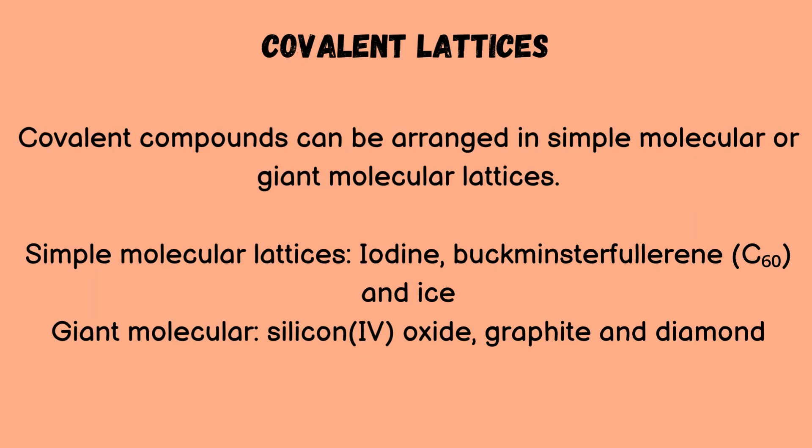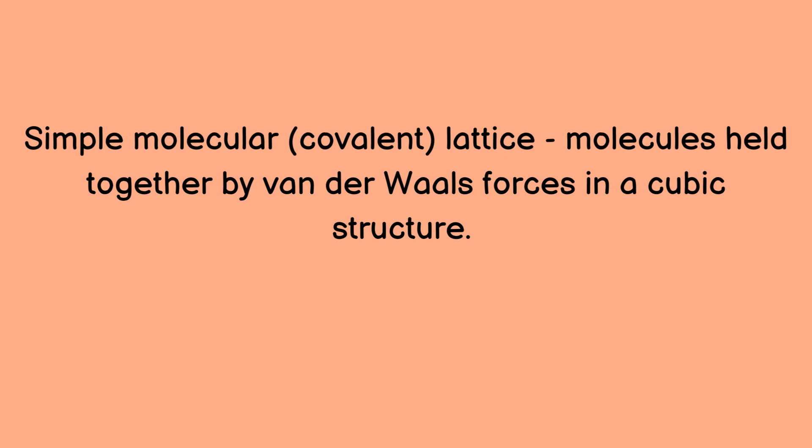Covalent compounds can be arranged in simple molecular or giant molecular lattices. Simple molecular lattice examples are iodine, buckminsterfullerene, and ice. Giant molecular lattice examples are silicon dioxide, graphite, and diamond. Simple molecular covalent lattices are molecules held together by van der Waals forces in a cubic structure.